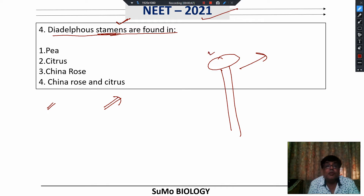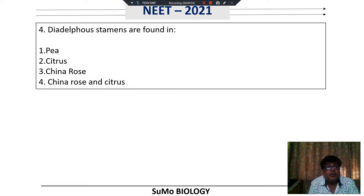And if more than two bundles — if they get fused into more than two bundles — then it is termed as polyadelphous condition. So here we are asked about diadelphous stamens. Diadelphous stamens are found in which plant? The answer is P.